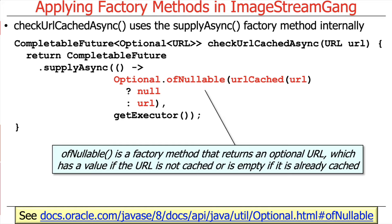ofNullable creates an optional from a parameter. If that parameter is non-null, we'll have an optional with a present value. If the parameter is null, then ofNullable creates an empty optional. So what we're doing here is either making an empty optional if we've already seen this URL and it's been processed, or making it have a URL indicating it needs to be downloaded.